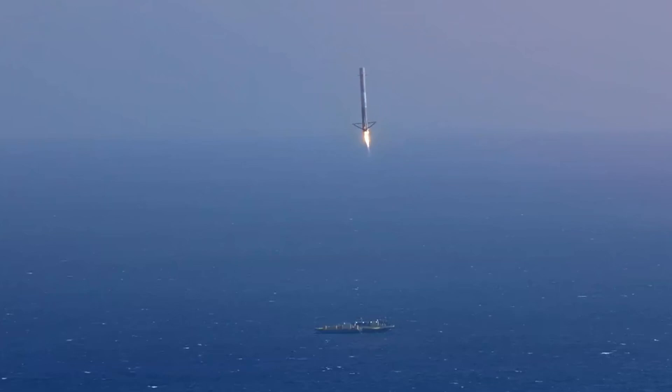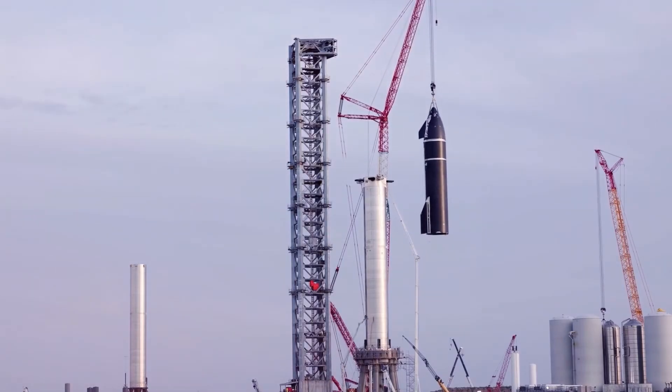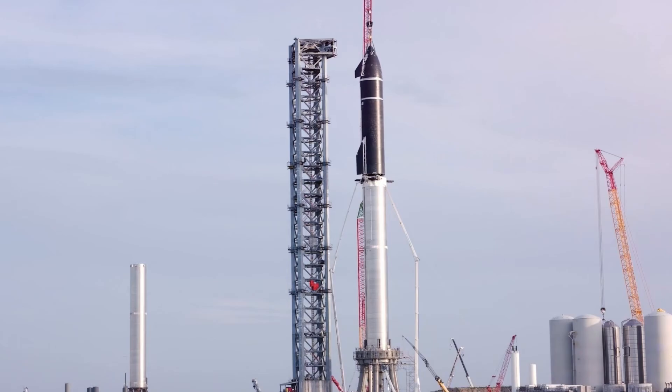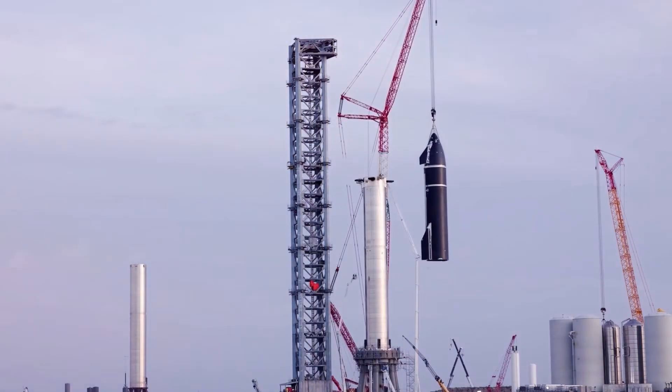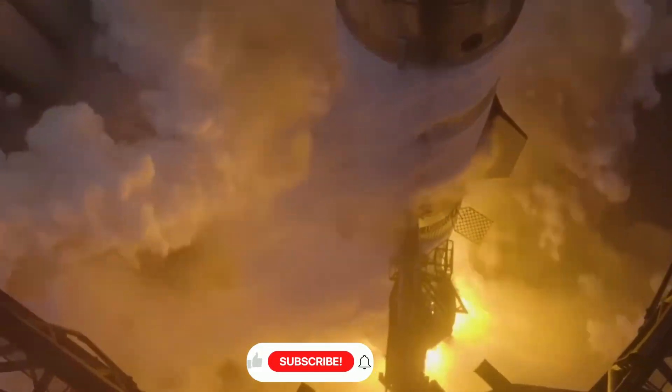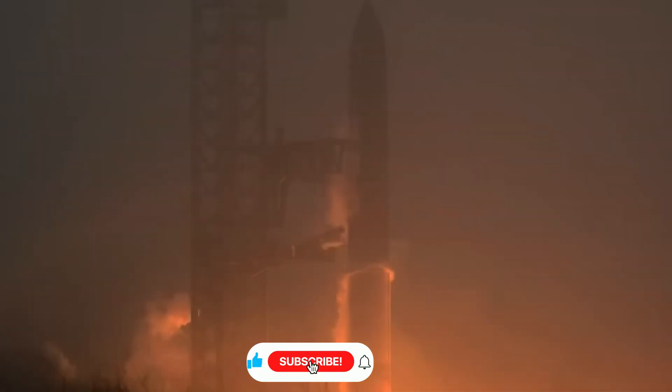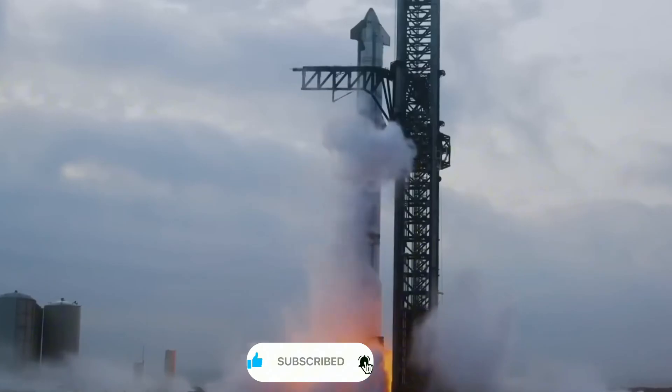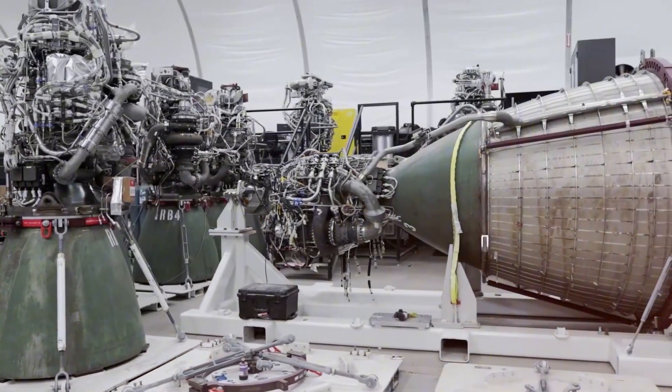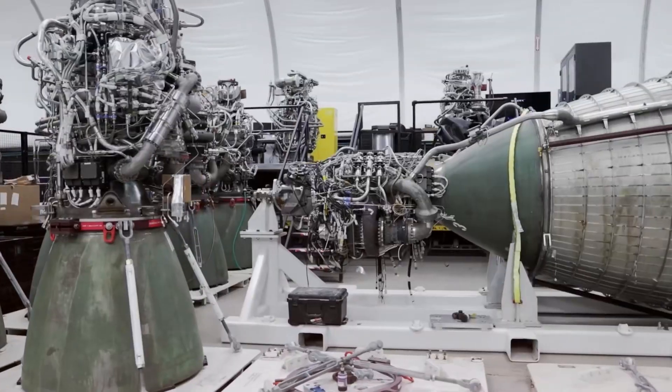This complexity wasn't just aesthetic, it represented genuine engineering challenges. Each external component was a potential point of failure, each exposed pipe a vulnerability to the extreme conditions of space flight. Traditional rocket engines typically had between 150 to 200 distinct parts, each requiring individual manufacturing, testing, and integration. The team knew there had to be a better way, but the path forward wasn't obvious. They would need to pioneer new technologies while mastering the notoriously difficult full-flow stage combustion cycle.